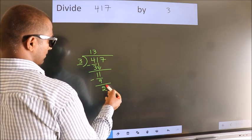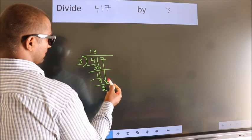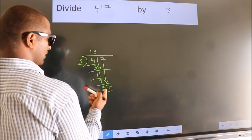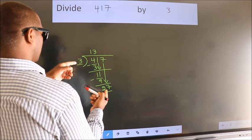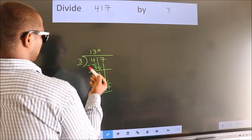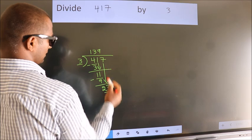After this bring down the beside number. So 7 down, so 27. When do we get 27? In 9 table. In 3 table, 3 9s 27.